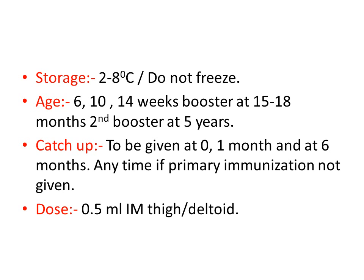If primary immunization doses have not been taken, that is called catch-up. Catch-up doses are given at 0, 1 month, and 6 months intervals — any time primary immunization has not been taken. The dose is 0.5 ml intramuscularly into the thigh or deltoid in catch-up immunization.